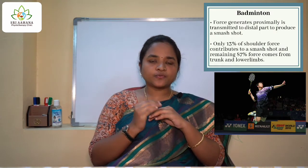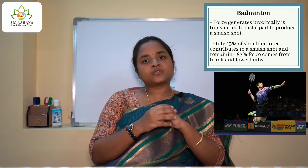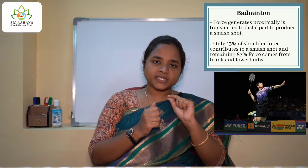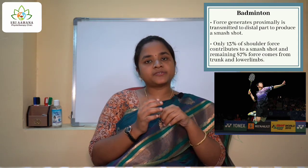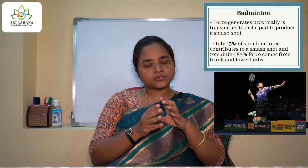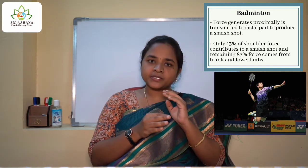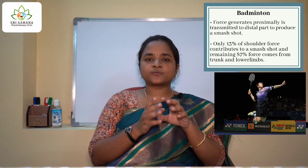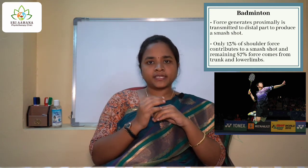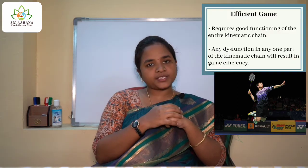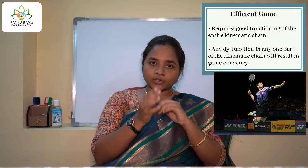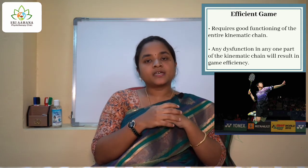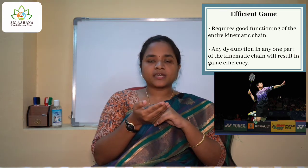Badminton is an example of an open chain activity. Interestingly, most people think the shoulder produces the maximum force for a shot, but the shoulder accounts for only 13% of the total force generated. The remaining 87% comes from the trunk and lower limbs. To be an efficient badminton player, it is necessary to maintain all interlinked segments — the lower limb, trunk, and shoulder — without dysfunction.